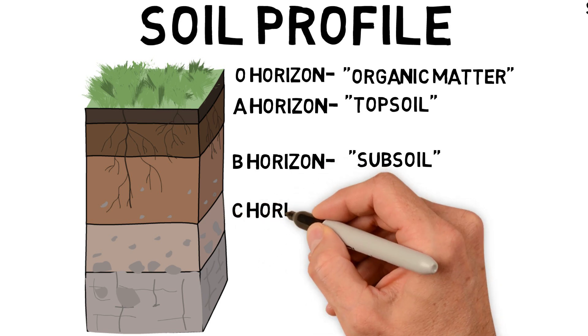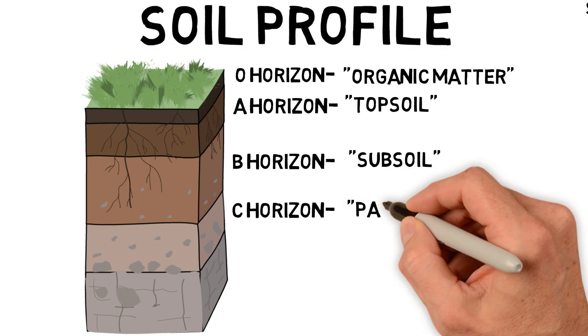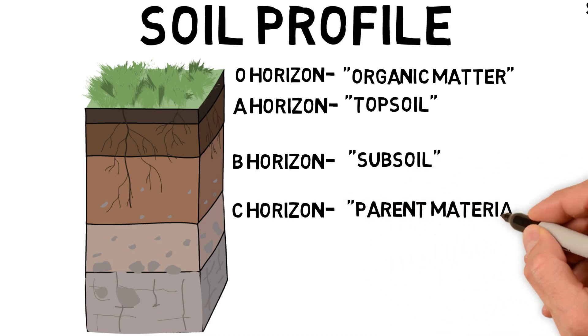The next horizon is the C horizon, and this horizon is typically characterized by a lighter color, maybe even an increased presence of rocks, and in a lot of situations is known as the parent material, or what the soil originally formed from.